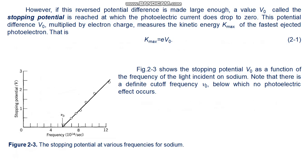However, if this reverse potential is made large enough, a value V₀ called the stopping potential is reached at which the photoelectric current does drop to zero. This potential difference V₀ multiplied by the electron charge measures the kinetic energy K_max of the fastest ejected photoelectron. That is, K_max equals eV₀.